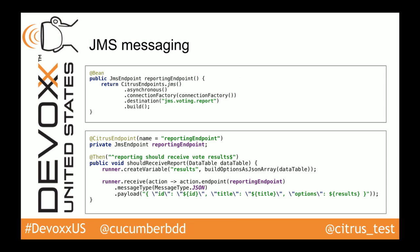Last but not least, the JMS communication. We create a JMS endpoint — an asynchronous JMS endpoint — giving it a connection factory and a destination name such as a queue or topic name. Then we are ready to send and receive messages over this destination. Using the runner API with runner dot receive, we reference the reporting endpoint and expect a JSON payload. This JSON payload is then compared element for element, with options in the JSON validator for ignoring sub-elements or handling different element ordering, since in JSON the order of elements is not fixed.